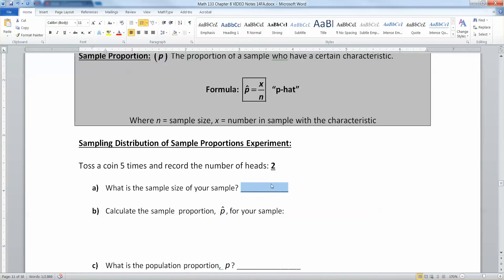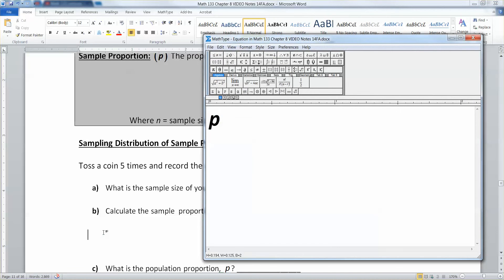So my sample size for me was five. Now you could take your own coin and do it yourself if you so desire. Now I have a sample proportion from that P hat. So let me write that out. P hat is equal to X over N. I flipped it five times, so my denominator is five and my numerator is two because I got two heads in my five tosses. Two out of five makes 0.4, so my proportion is 0.4, which is also 40%.